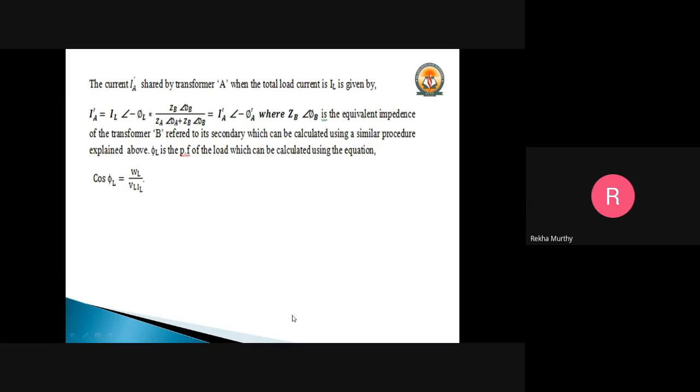So IA prime can be calculated by using this formula: that is IL with an angle of minus psi L, which is multiplied by ZB at an angle of psi B divided by ZA at an angle of psi A plus ZB at an angle of psi B. This is nothing but the primary of the first transformer, that will be given by the load current multiplied by the other part of the transformer impedance divided by the addition of the impedances of the two transformers, transformer A and transformer B.